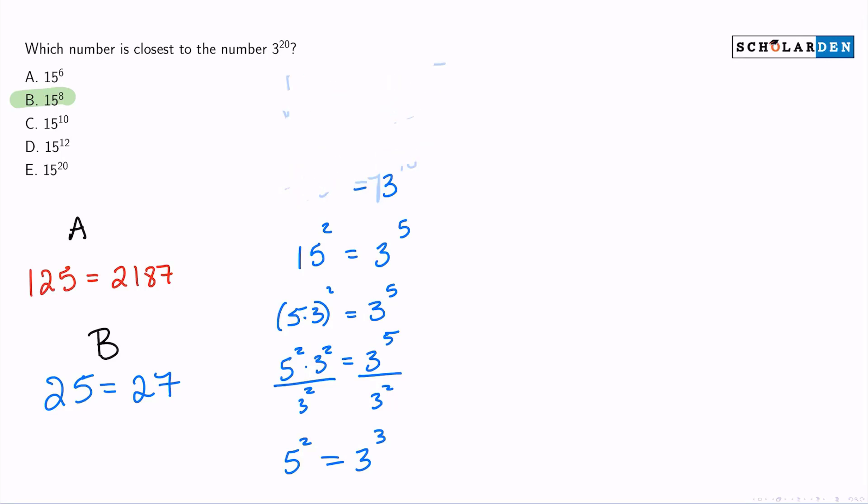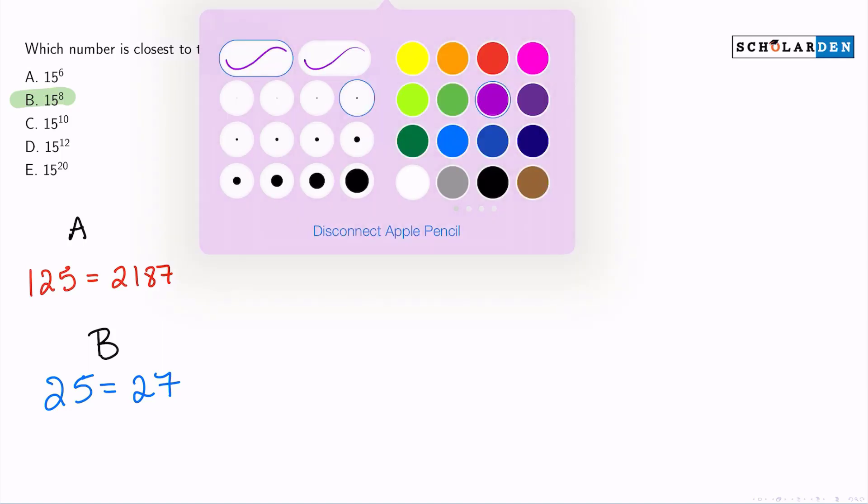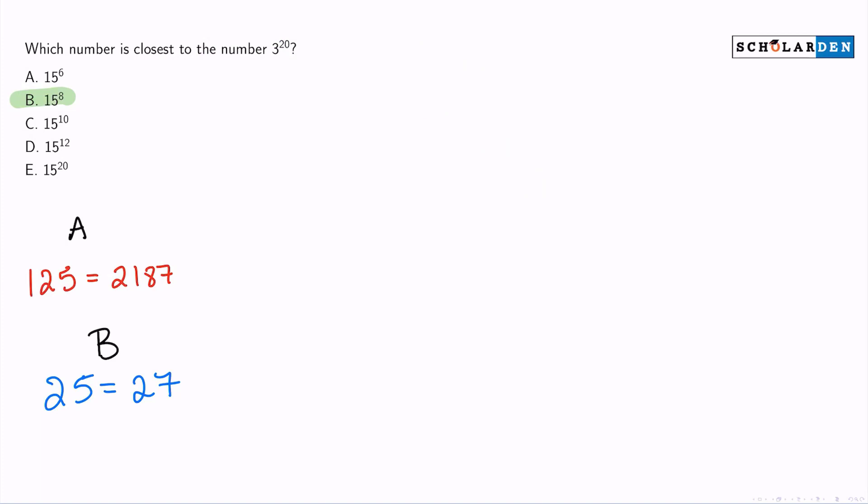So let's go ahead and show C. And here's the thing. Because we've gotten so close with B, notice how we went from 125 to 2187, to 25 to 27. We got a lot closer than that. So if we just do C, C is probably the last thing we'll need to really compare here. So let's go ahead and do that again. 15 to the power of 10, 3 to the power of 20. Let's try this thing out.